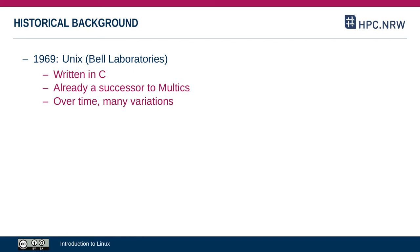Most IT companies that you've heard of — Microsoft, Hewlett Packard — have had their own Unix system. Some variations of Unix have been around until today. For example, macOS is a derivative of a derivative of Unix.